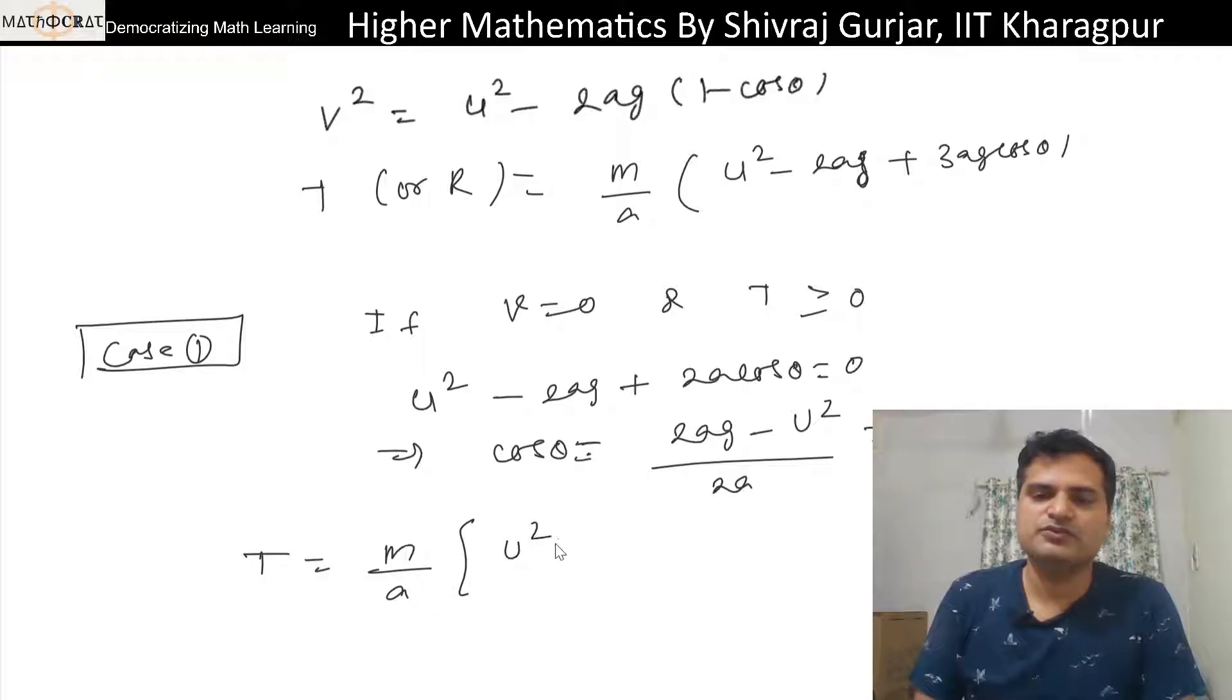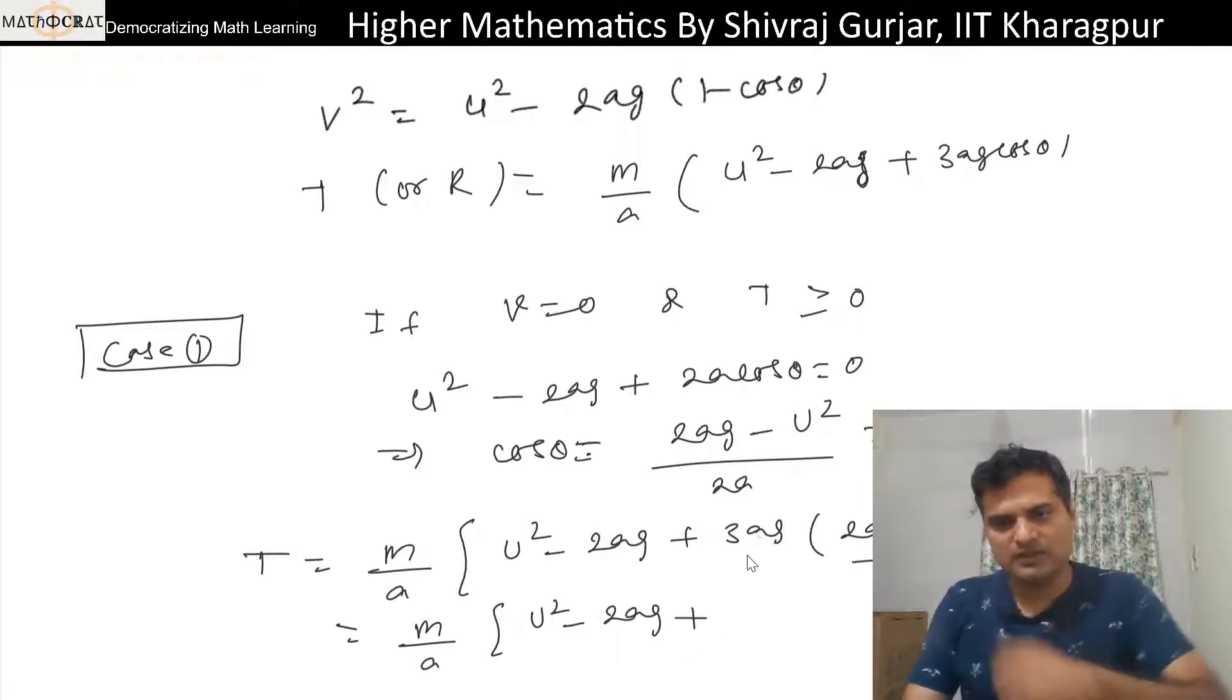u² - 2az + 3az cos θ (2az - u²) divided by 2az. So this will be m/a, u² - 2az plus.